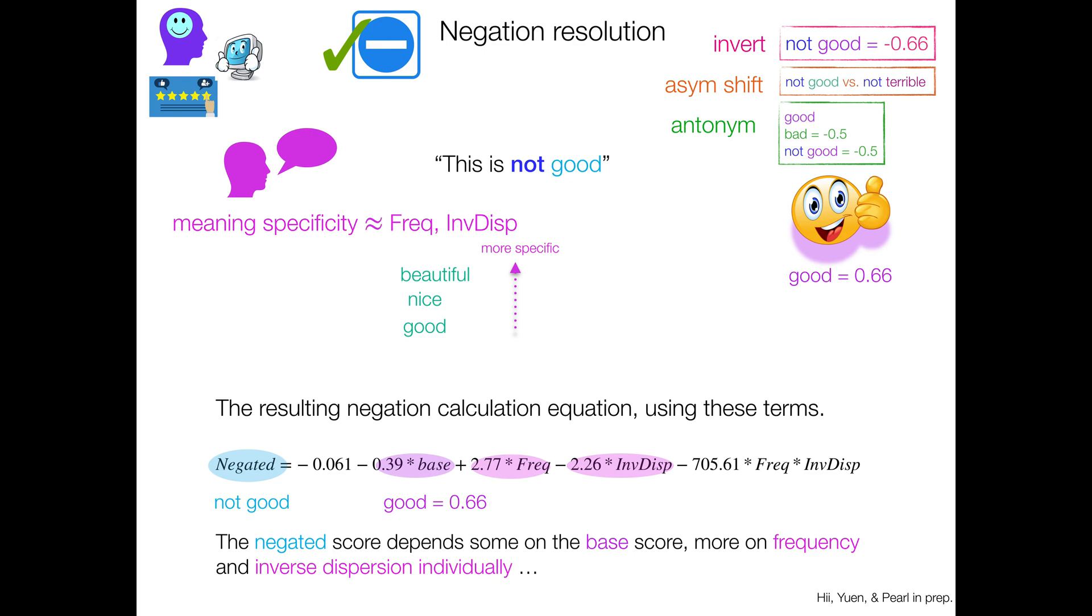And it's going to depend a heck of a lot more on the interaction of frequency and inverse dispersion, like 2 orders of magnitude more. But this is what we can use to sort of approximate incorporating meaning specificity into that negation resolution process.